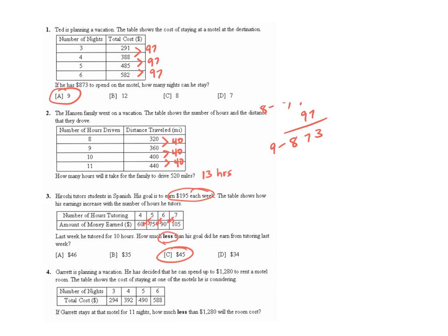Question four is the same type of problem without multiple choice. Garrett is planning a vacation. He has decided that he can spend up to $1,280 to rent a motel room. The table shows the cost of staying at one of the motels that he's considering. So it looks like the number of nights is just increasing by one each time. So because this went up by one every single time, we can just look at how much these are going up each time to figure out the price of the motel each night.